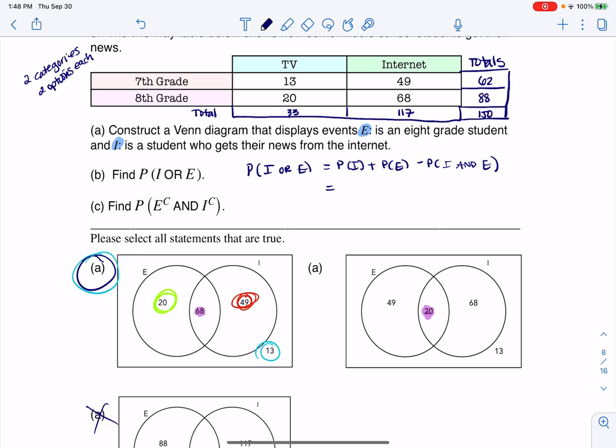Alright. So let's go ahead and figure out where we are here. So for probability of I, the internet folks, I can see there's 117 out of 150. So let me go ahead and write 117 out of 150. And then I need to get the eighth grade folks. So the eighth graders, there's 88 of them. So that's going to have me add 88 out of 150.